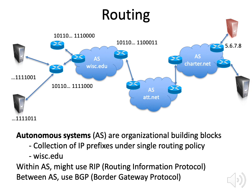So between autonomous systems they use the Border Gateway Protocol. The idea of this protocol is to learn where you can send packets, and packets are sent according to preferences. For example, you might have a business relationship that says AT&T should send packets through Charter, or it might decide it doesn't like Charter and want to send packets through wisc.edu. So within an autonomous system we use one protocol like RIP or OSPF; between autonomous systems — the internet as a whole — we use BGP.